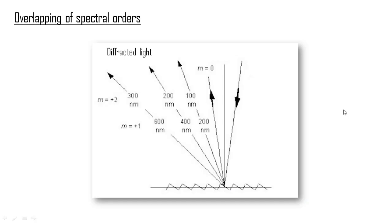Another consequence of the grating equation is that we observe overlapping of spectral orders of different wavelengths. In this picture, a polychromatic light strikes the grating from the right and is diffracted. The grating equation tells us that the light for the wavelengths 100, 200 and 300 nanometers in the second order are diffracted in the same direction as the light for the wavelength 200, 400 and 600 nanometers in the first order.